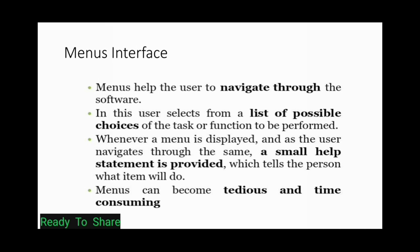Menu interface: a menu helps the user to navigate through software. The user selects from a list of possible choices, which are the tasks or functions to perform. When a menu is displayed and the user navigates through it, a small help box appears. For example, in Microsoft Word, there is a menu bar — clicking on an item shows a small help box describing what can be done with it. Working with menus can sometimes be time-consuming and involve difficult tasks.